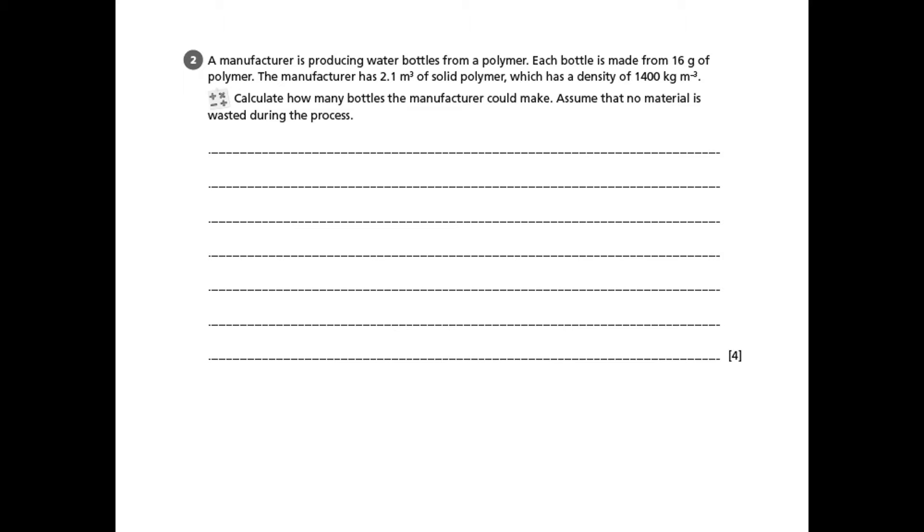I'm looking for the command word in this question and I can see that it's the calculate question. It's even got a little symbol right next to it that helps us. But first of all, let's read the detail in the actual question. We can see that the manufacturer is producing water bottles. Each bottle is made from 16 grams. The manufacturer has 2.1 meters cubed of polymer, and that polymer has a density of 1400 kilograms per meter cubed. The question allows us to assume that no material is wasted.